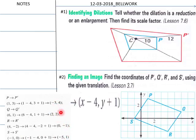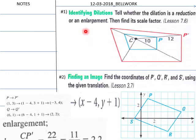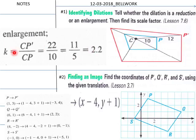So the translations are negative three, four; two, two; zero, negative one; and negative five, one. Students, if you don't have that, write these solutions down — you'll get partial credit at least in my classroom. For number one, the enlargement scale factor is 2.2, so the quadrilateral is an enlargement of 2.2 times the original.